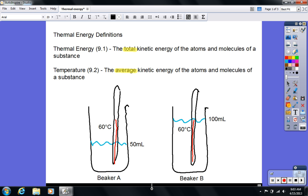So in Beaker A we have 50 milliliters of water. In Beaker B we have 100 milliliters of water. We put a thermometer in each one, and both thermometers tell us that the water is 60 degrees Celsius.